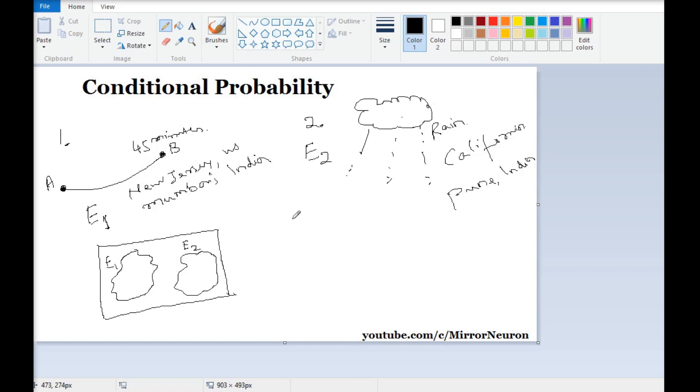But what if I am in Mumbai and I want to know whether I will be able to reach from A to B within 45 minutes, given that I already see it is raining? That means my event two is already happening, which I am confirmed about. I just want to know whether I will be able to reach from A to B within 45 minutes or not.